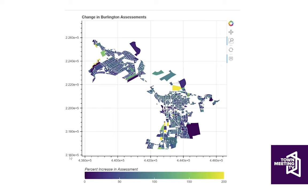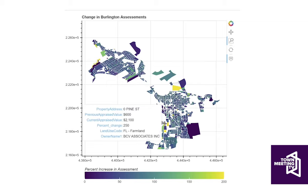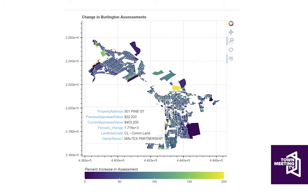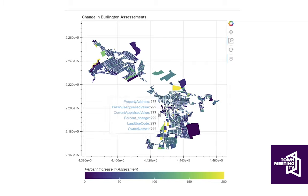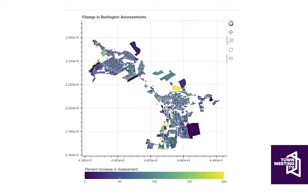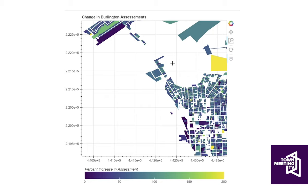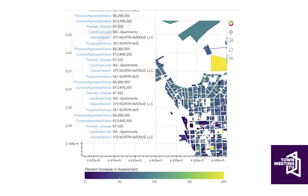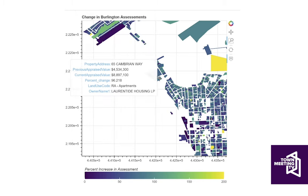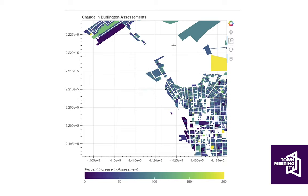I used that to create a percent increase in assessment value for each parcel, and then made this simple interactive map. You can see the color bar here — purple to yellow, with yellow being highest. It's a little truncated because there are some properties below zero and some much higher than 200%. One limitation is I can't tell from this data set whether a property assessment went up because a new building was built there — for example, down at Cambrian Rise, some parcels went up a lot because they built an enormous apartment building.